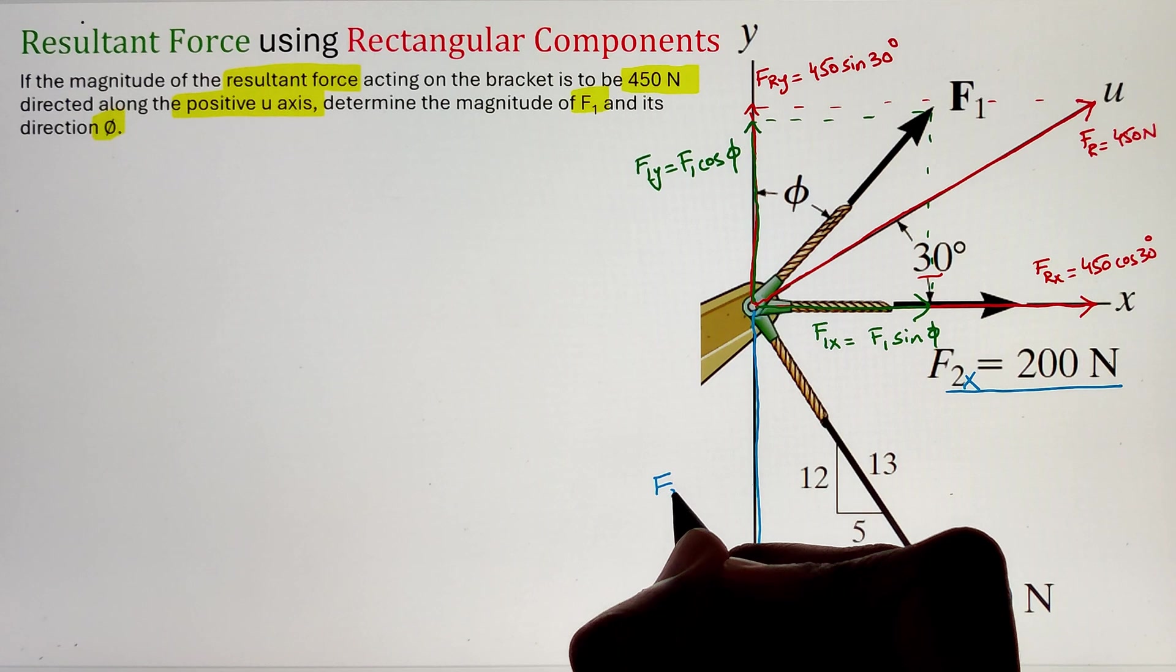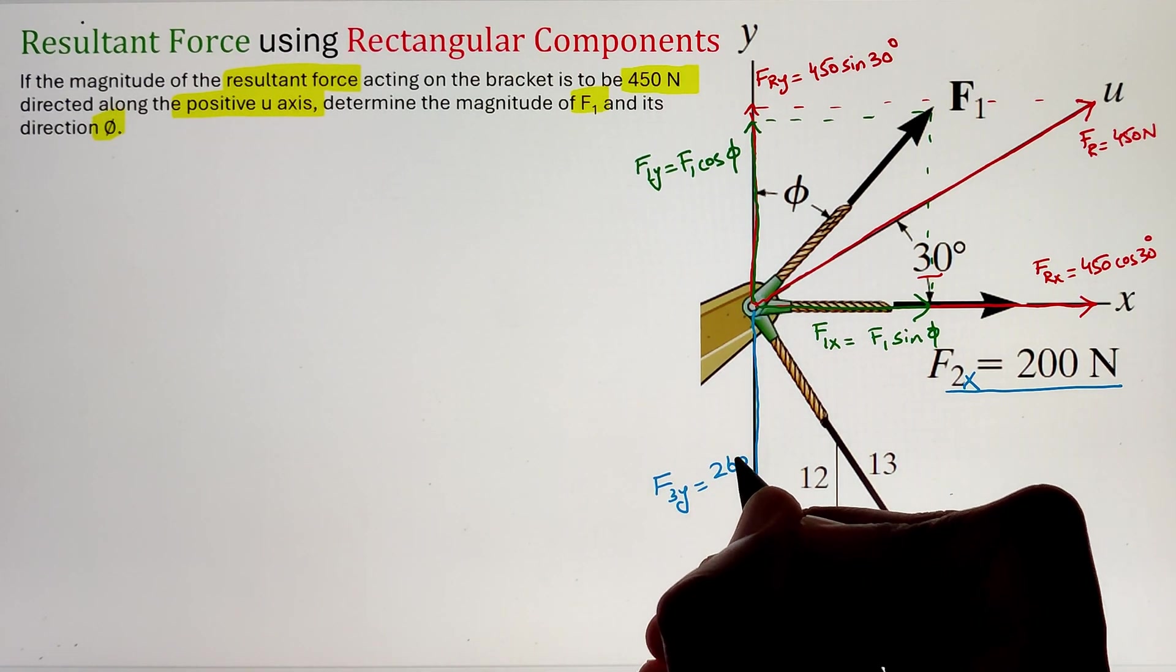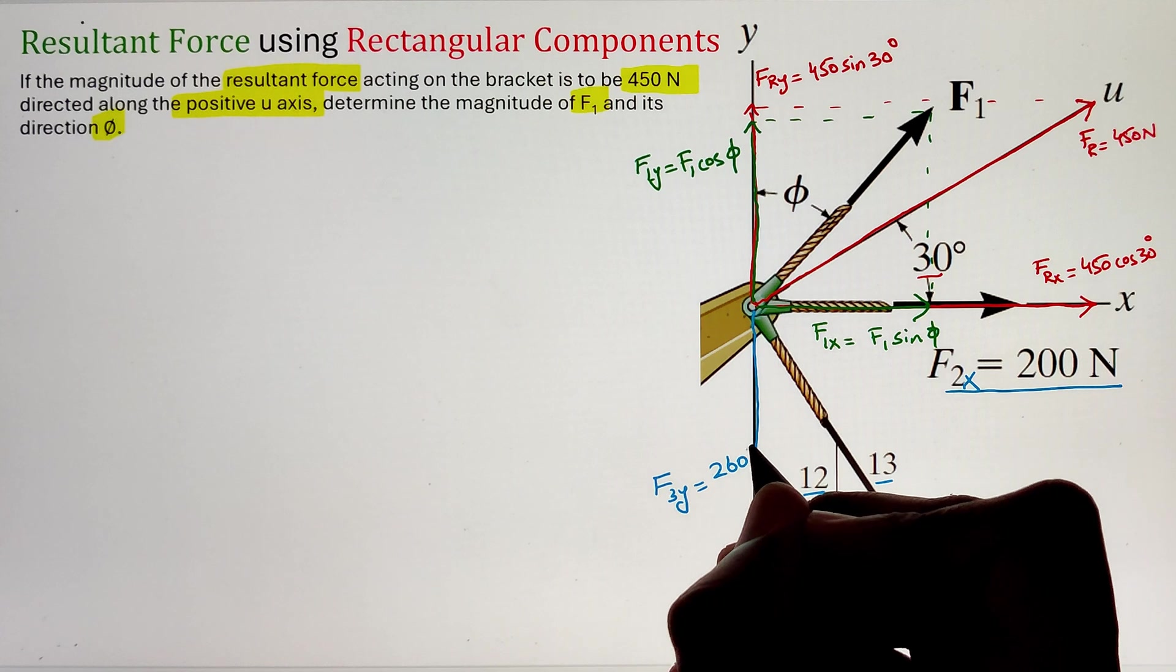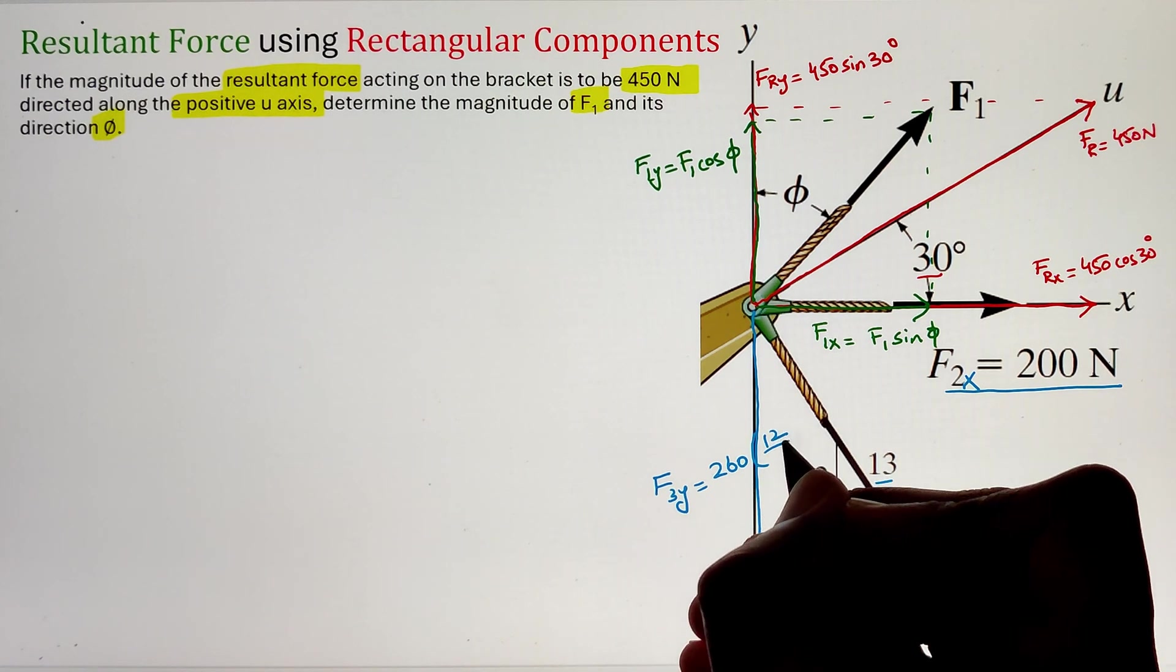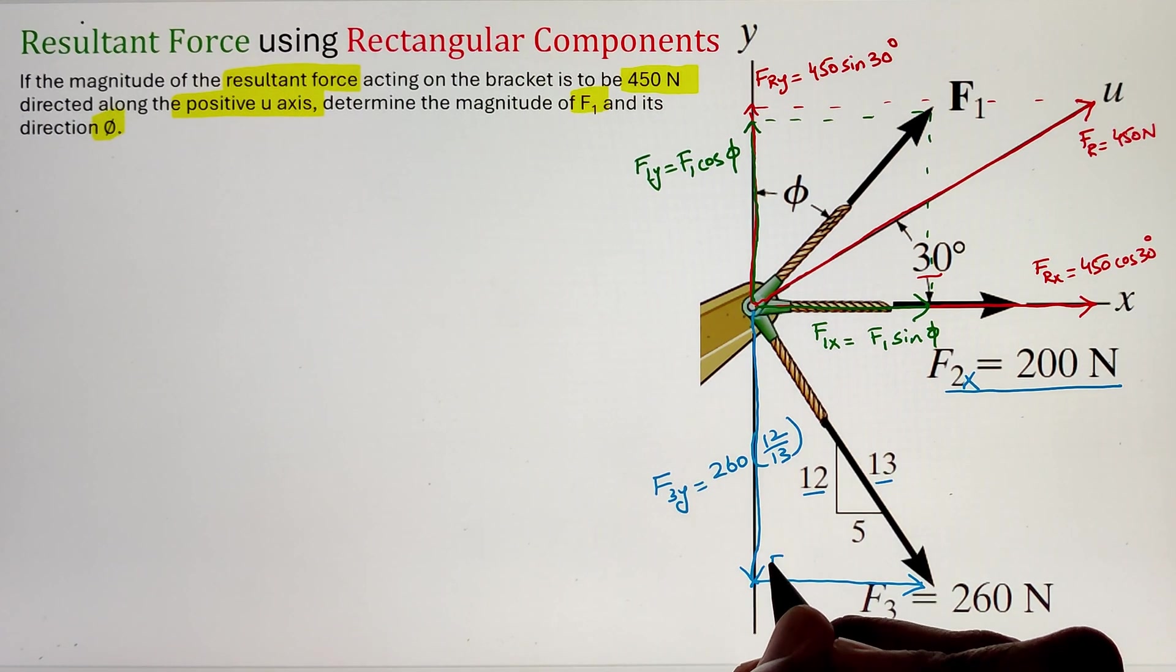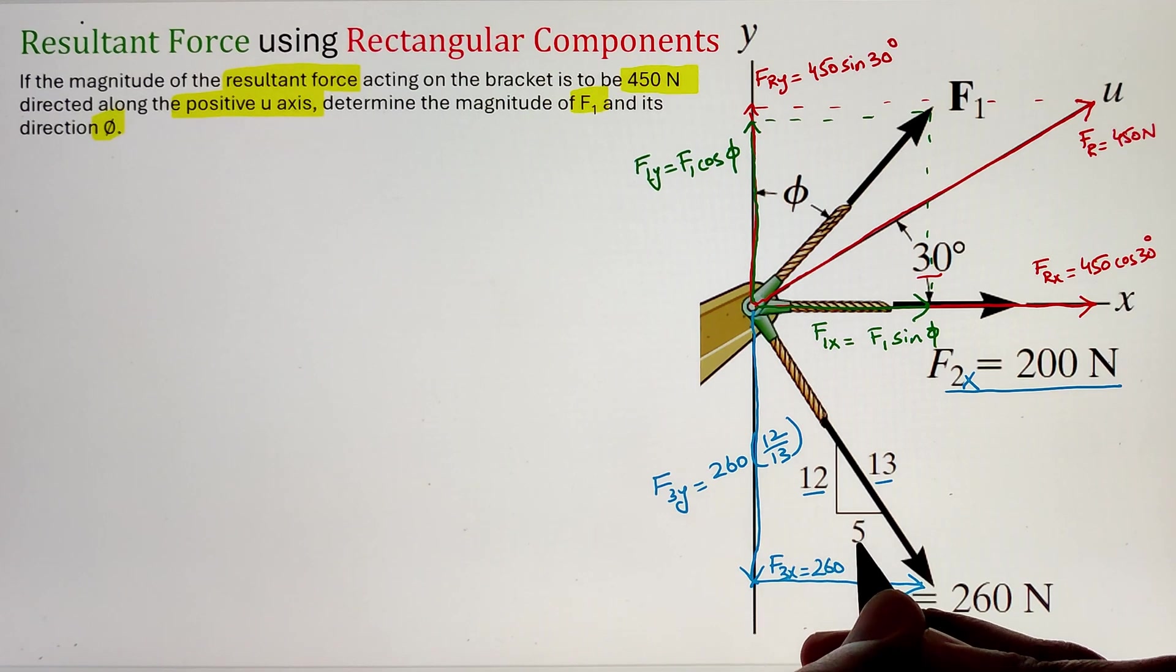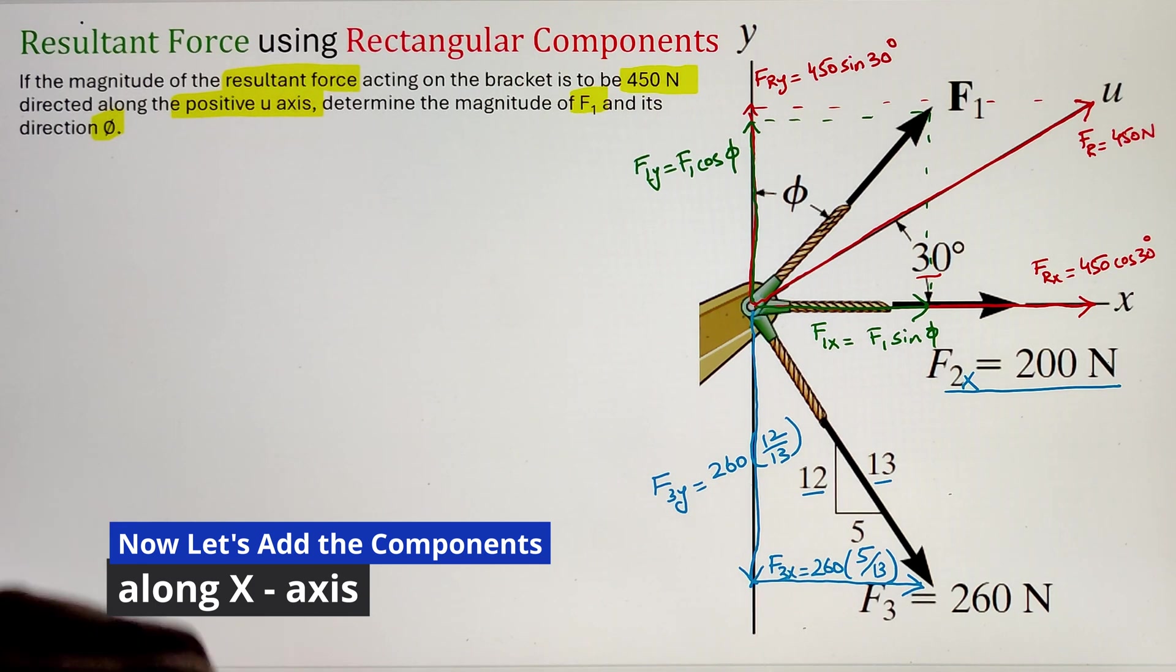Finally, we have our force F3 of 260 Newton. In order to calculate the y-component, here we are given the right-angled triangle. Multiplying the opposite over the adjacent with the magnitude of the force 260 will give us the y-component. Whereas, if we multiply the adjacent over the hypotenuse with our force magnitude of 260, it will give us our x-component.